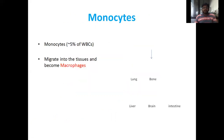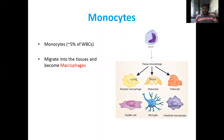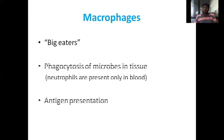Monocytes comprise less than 5% of WBCs. They migrate into tissues and become macrophages in an active state. Tissue macrophages are found in the lungs, bone, and as histiocytes. They are known as Kupffer cells, microglia, intestinal macrophages, alveolar macrophages, osteoclasts, and histiocytes. Macrophages are the 'big eaters' and perform phagocytosis of microbes in tissues. Neutrophils are present only in the blood, while macrophages are present in different tissues and are also known as antigen-presenting cells.